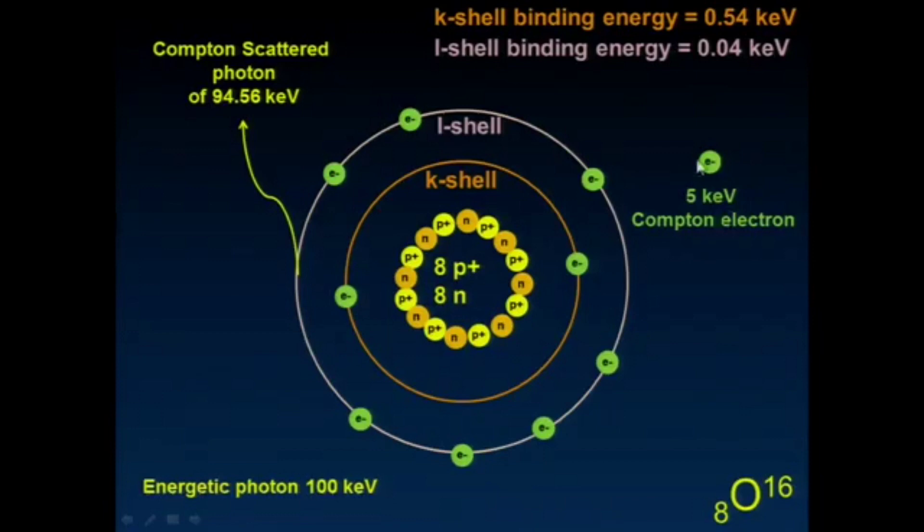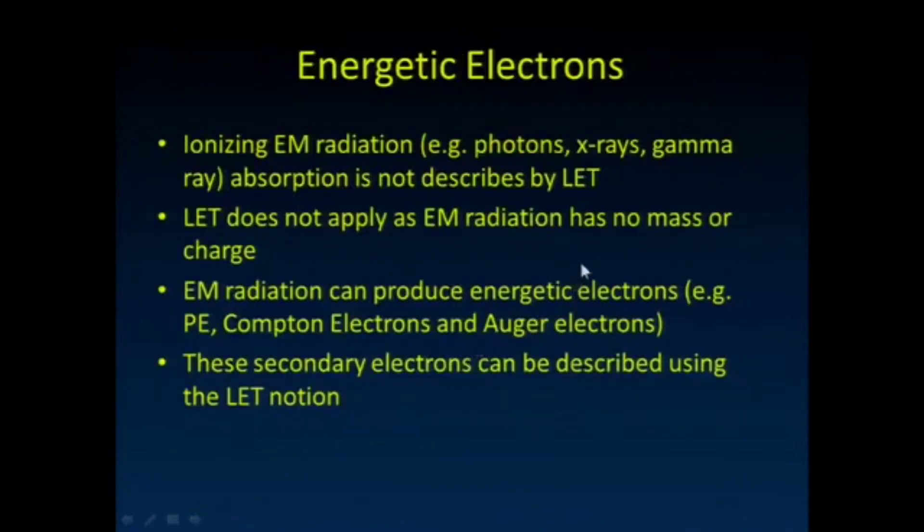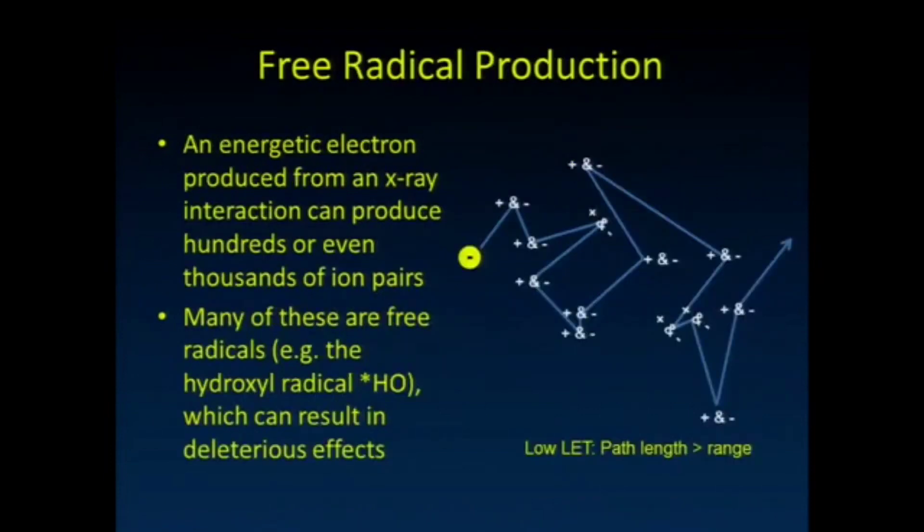And so, we then get this lower energy 5 keV Compton electron here. So part of that dose was imparted to it there. So, these energetic electrons—ionizing electromagnetic radiation like x-rays, gamma rays, is not described by LET. LET is specifically meant to describe particulate radiation absorption. And so, it doesn't apply to things that have no mass and have no charge. But the first thing that this electromagnetic radiation does is produce those energetic electrons that we just showed examples of again. And those secondary electrons can be described using that LET notion. So, it shouldn't be surprising that when we look at the relative weighting factors of how much damage that different types of radiation do, that gamma rays and x-rays really fall in the same category as low LET radiation like energetic electrons.